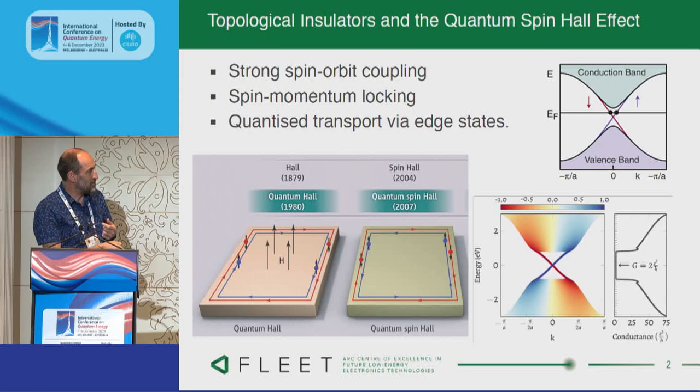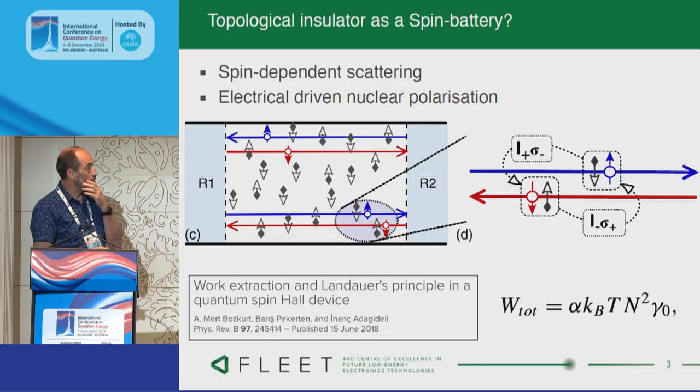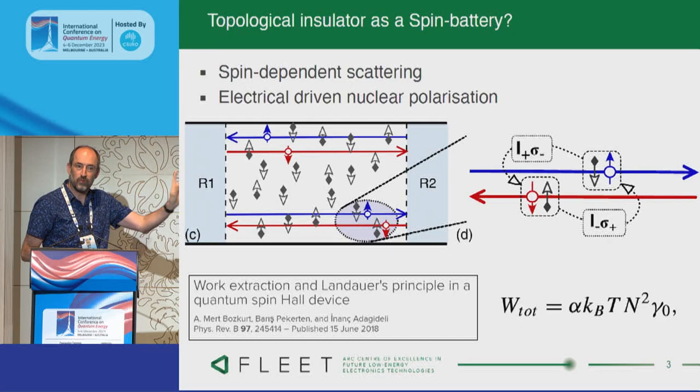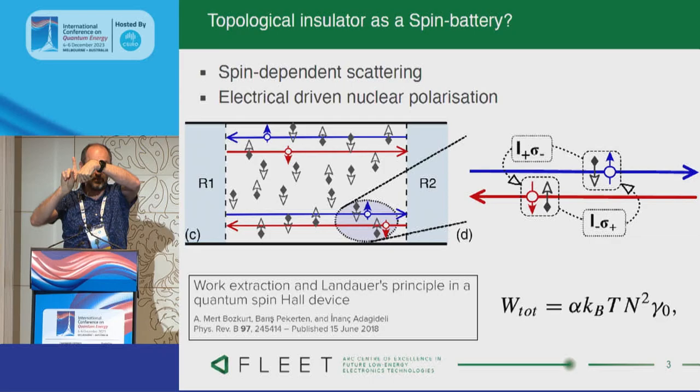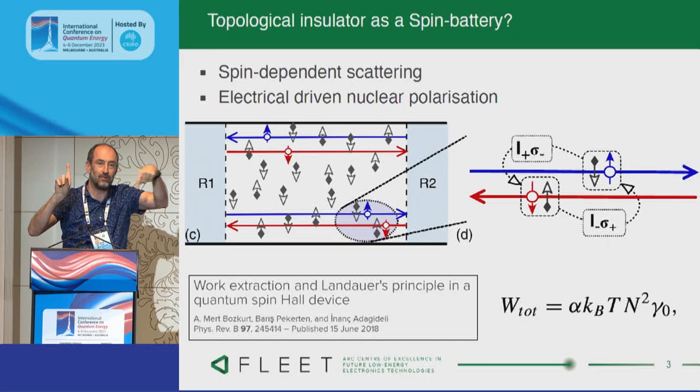This was work done with the FLEET Centre, which is trying to build low-power transistors out of these kinds of materials. But here I'm talking about using it to store energy. There's this proposal — not ours — from a few years ago, where they looked at what happens when you have nuclear spins inside the material and they interact with the charge carriers. An electron comes in with some spin and there's a nuclear spin pointed in the opposite direction. They interact, they swap their spin state, and because of the spin-momentum locking, the charge carrier now goes back the other way. So it's a spin-dependent scattering process.